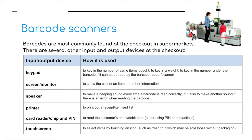You might also find other input and output devices in a supermarket. First, you might find a keypad — if the customer buys many of the same product, we can scan one item and then use a keypad to enter the number of items bought. A screen or monitor can show the cost of an item and other information to the customer. A speaker makes a beeping sound every time a product passes the barcode reader. A printer prints out receipts. A card reader reads the customer's credit or debit card. Also, a touchscreen where items can be selected using touch icons, including in the grocery section for weighing and inputting quantities of foods.